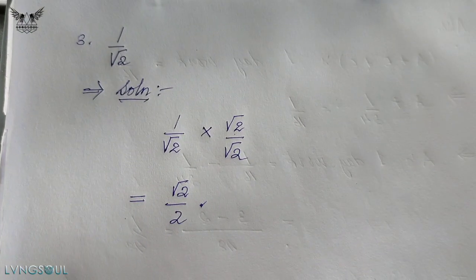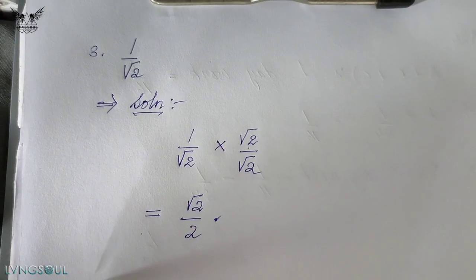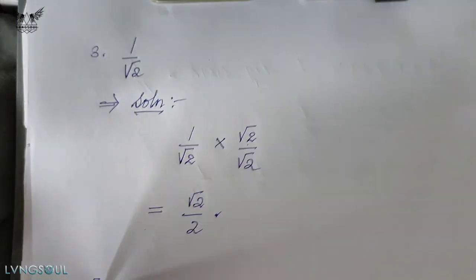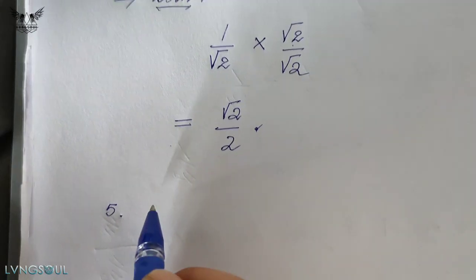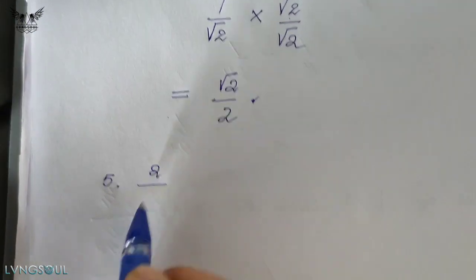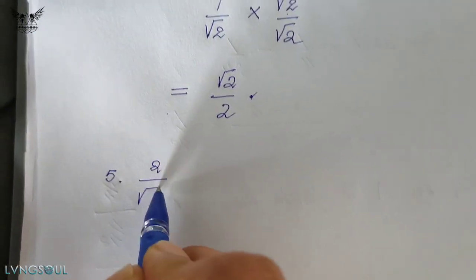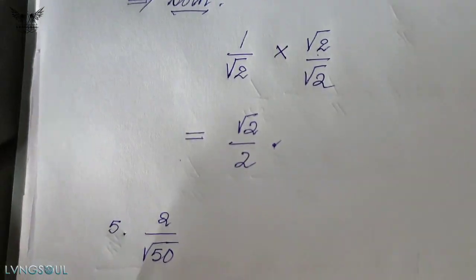Now question number five: we have one by root 50. To rationalize this, we first need to simplify root 50.